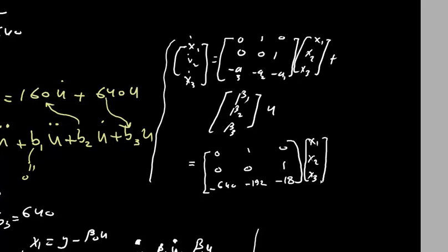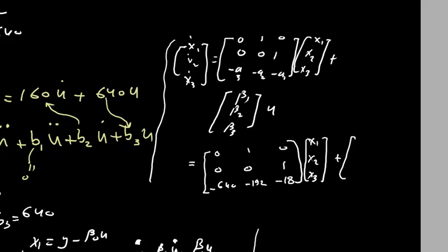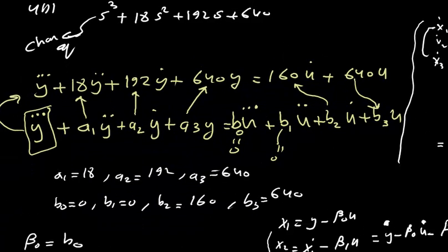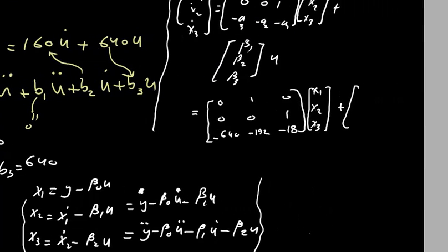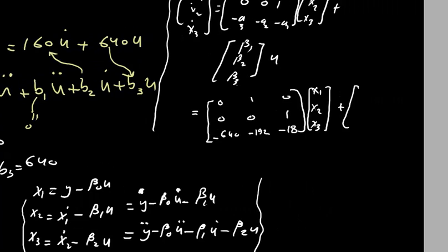After substituting the beta values — β0=0, β1=0, β2=160, β3=640 — you find the input vector becomes [0, 160, −2240]ᵀ · u. So the complete state equation has been determined.